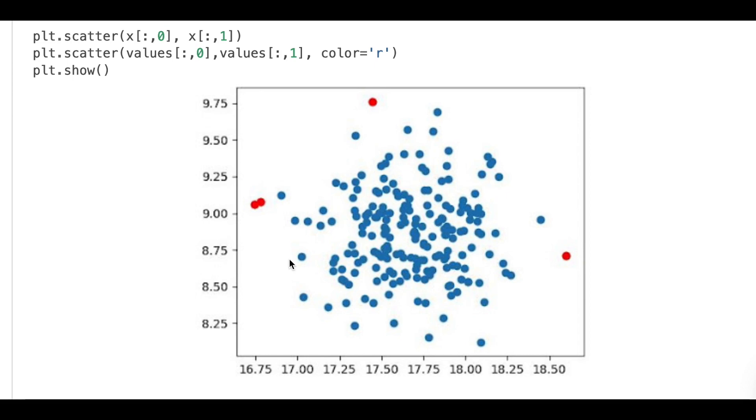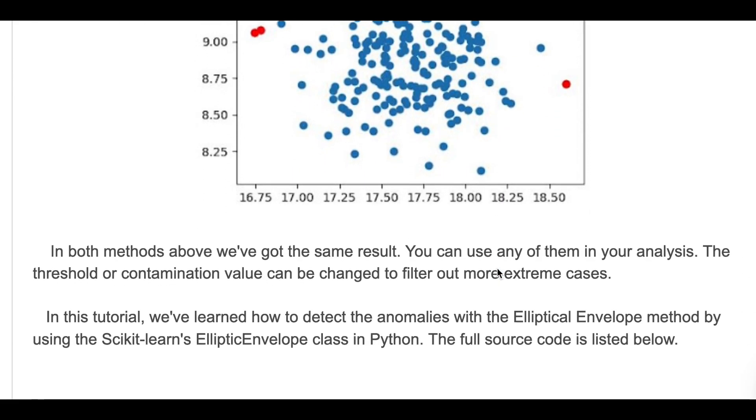Here we also found four anomaly cases, so you can use either method in your analysis. The threshold or contamination value can be changed to filter out more extreme cases.